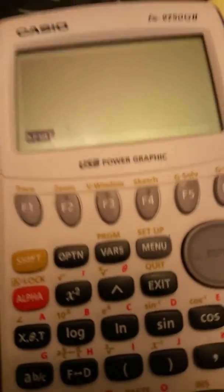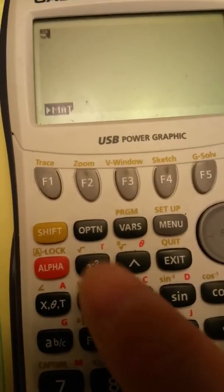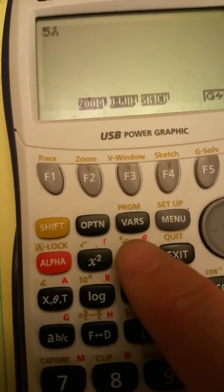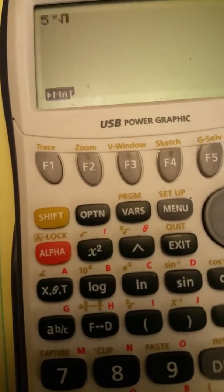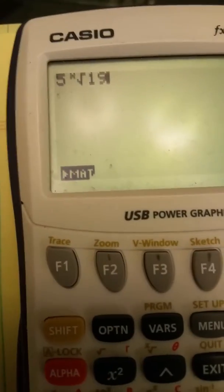All right, so it goes like this. First, you hit five, then you hit shift, x root, and you hit 19. So your screen looks like that.